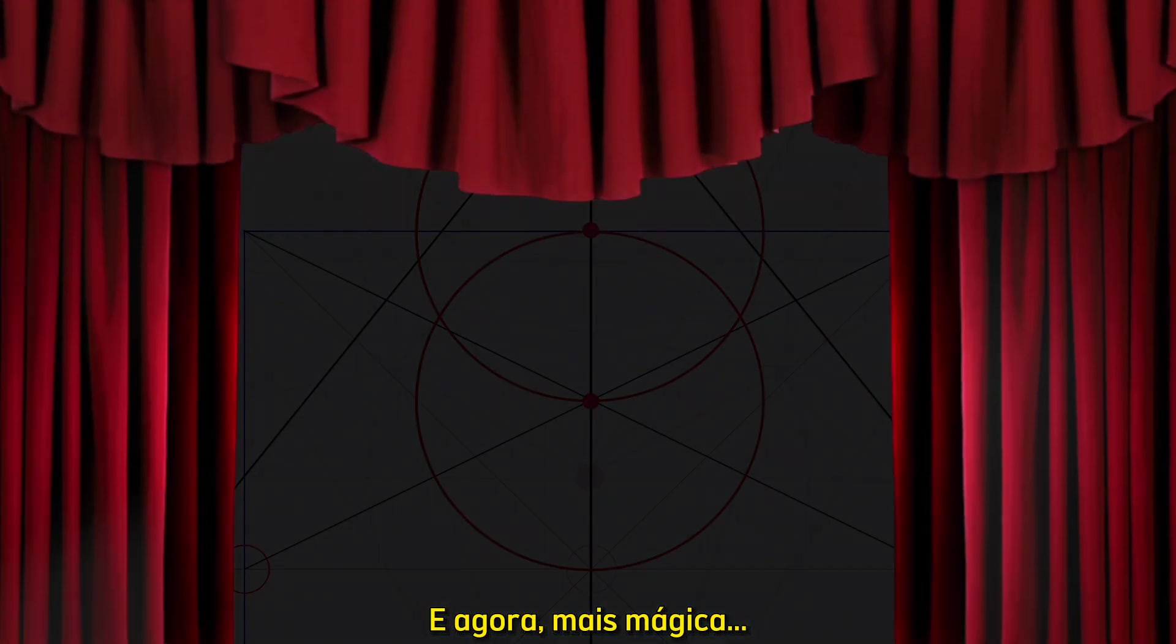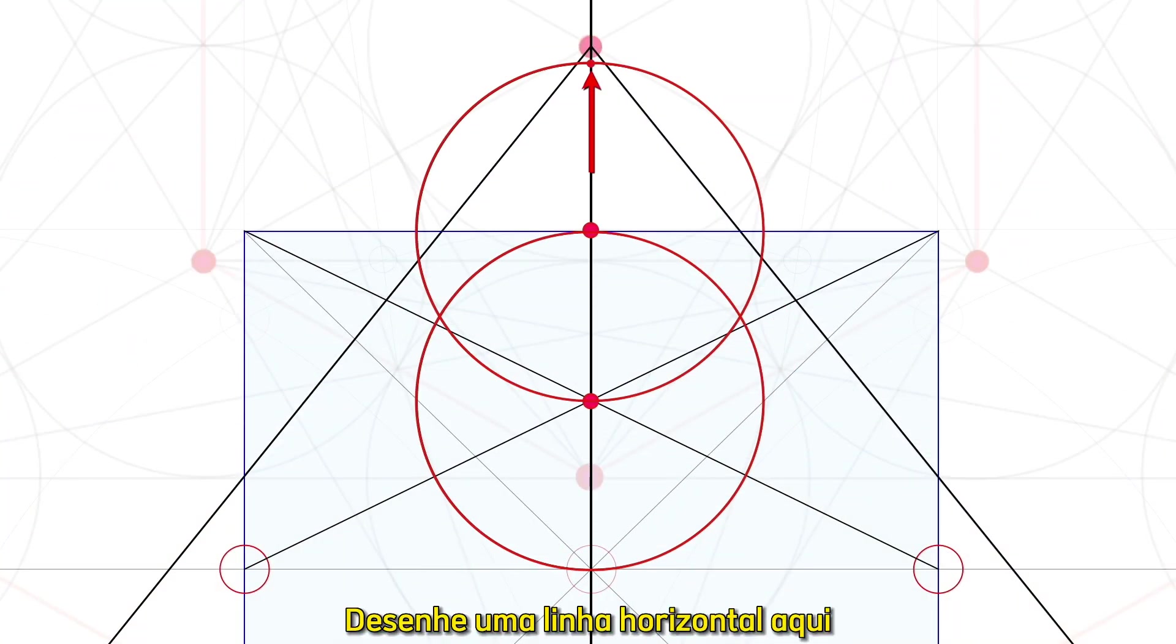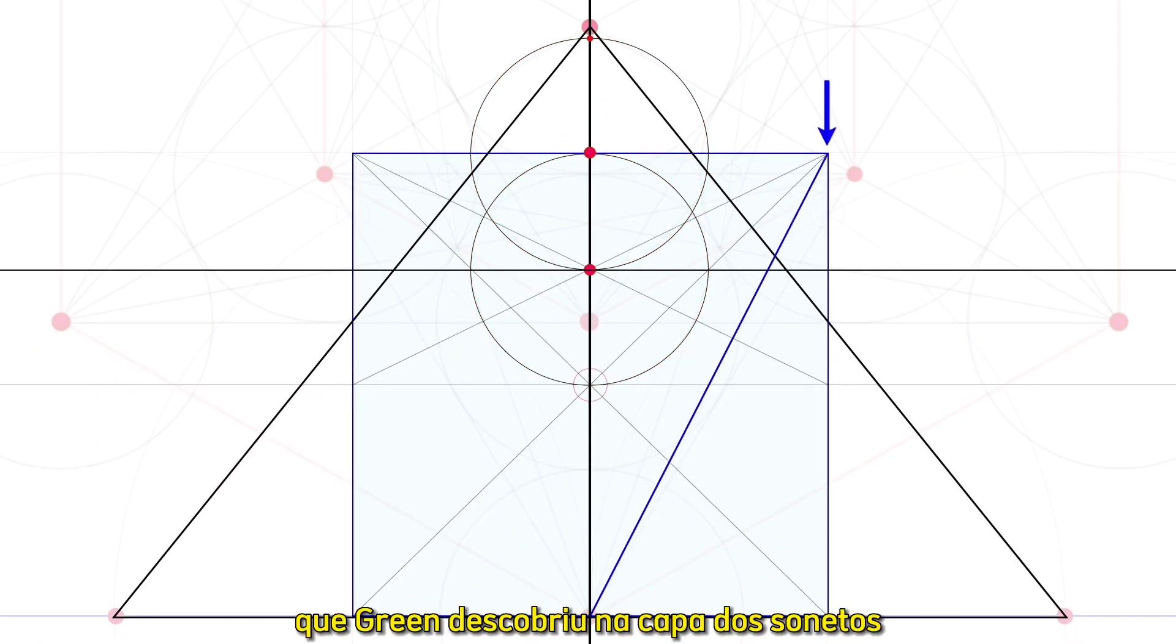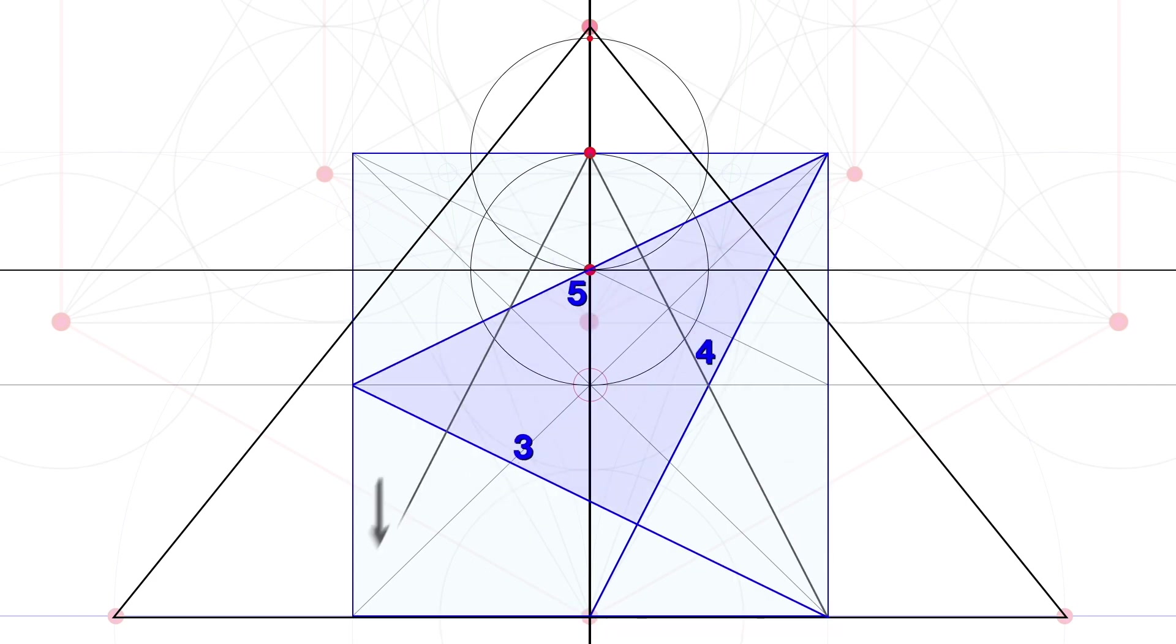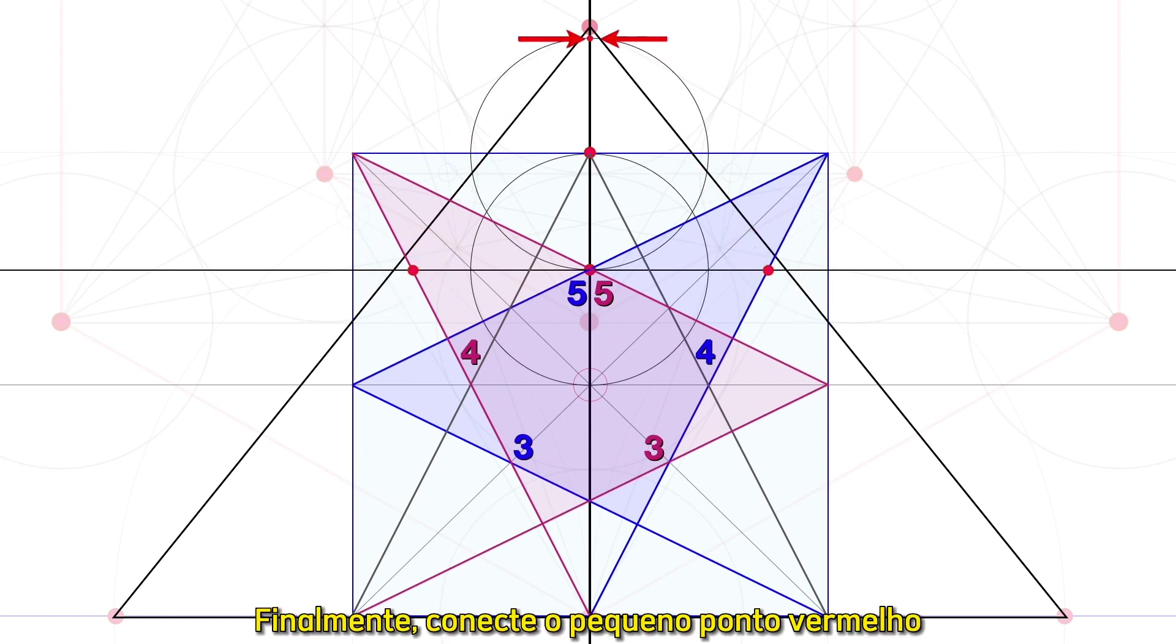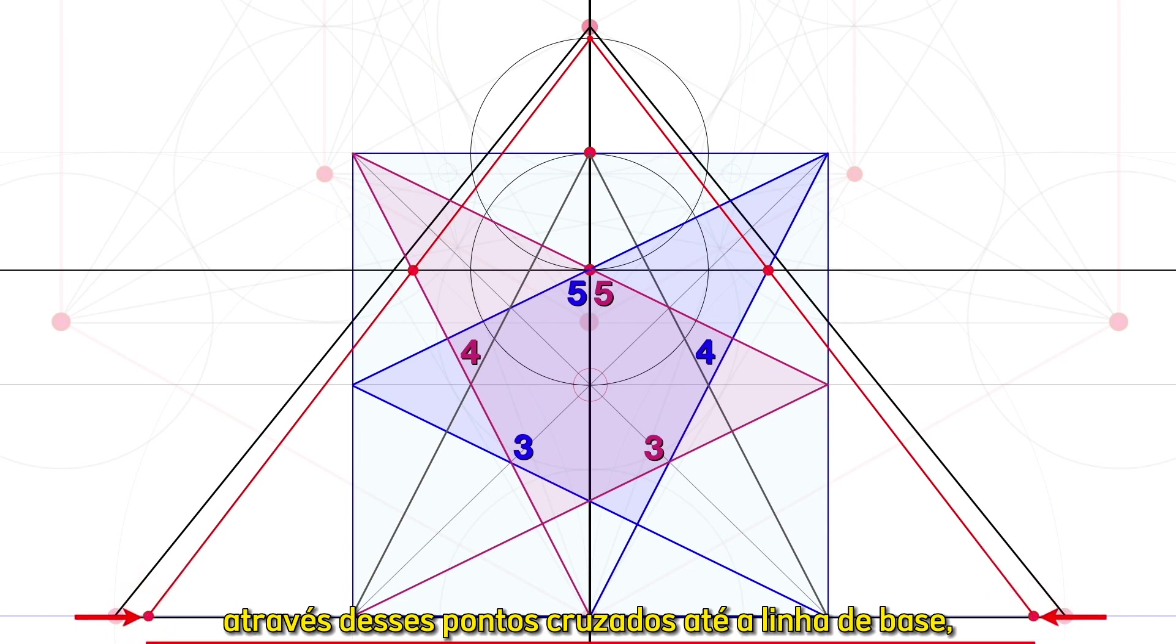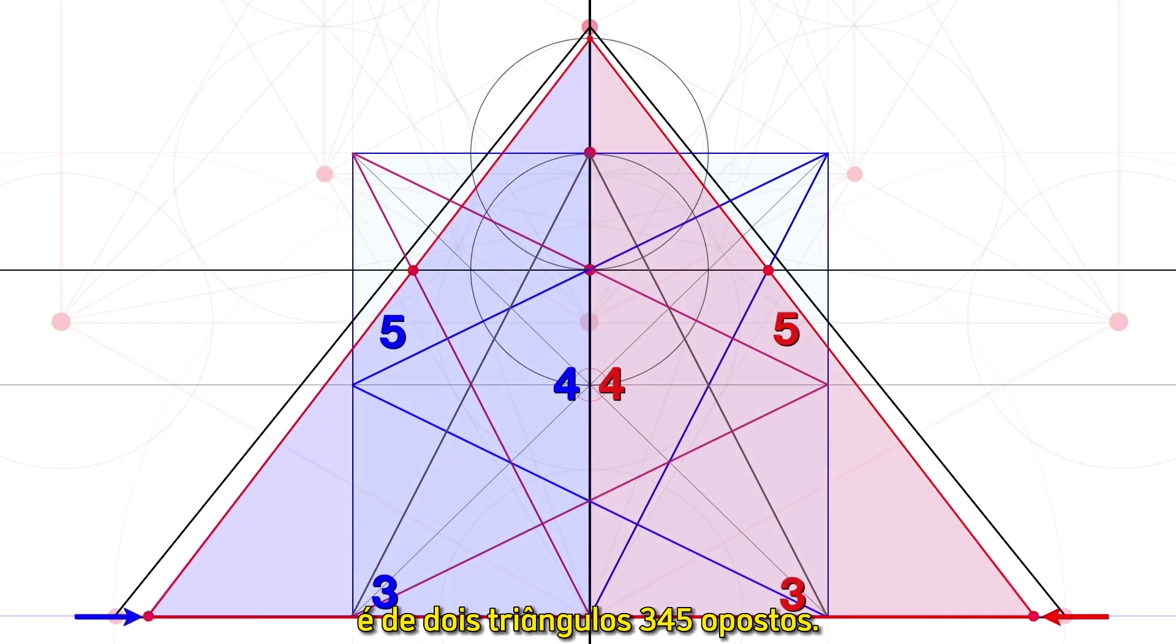And now, more magic! Draw a horizontal line here and duplicate the method Green discovered on the sonnet's cover to reveal the hidden 3-4-5 triangle. Draw another 3-4-5 triangle here and mark where they crossed the horizontal. Finally, connect from the small red dot through those cross points down to the baseline.